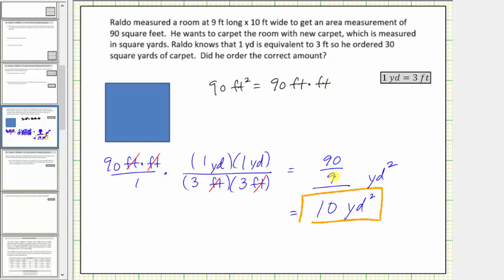To better understand why we divided by nine here, let's assume this square here is one square yard. Well we know one yard equals three feet. So let's cut this square yard into square feet and count the number of square feet. To do this we cut the square vertically into three equal parts and horizontally into three equal parts. Now we can see there are nine square feet and one square yard, which is the reason why we divided ninety square feet by nine to convert to square yards.